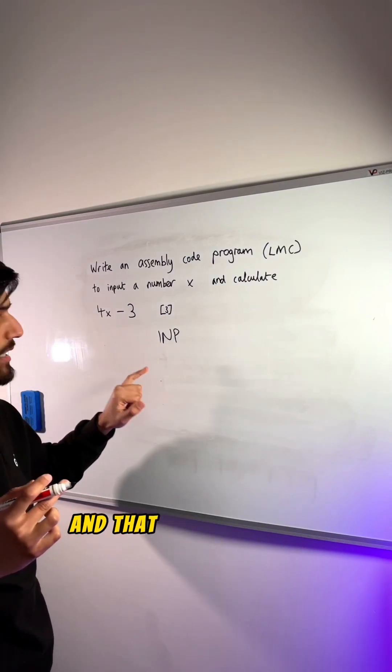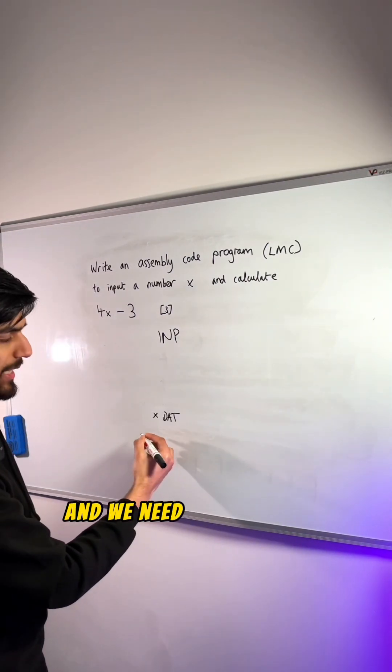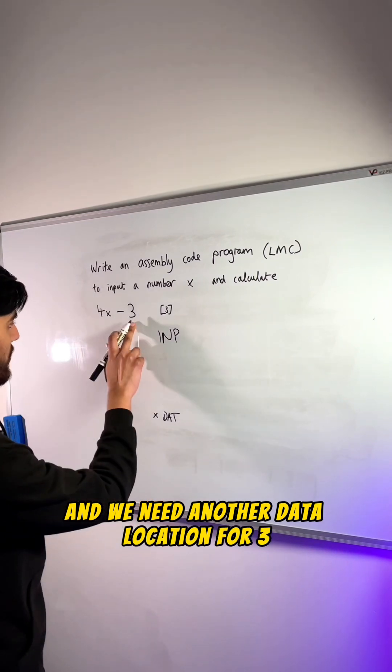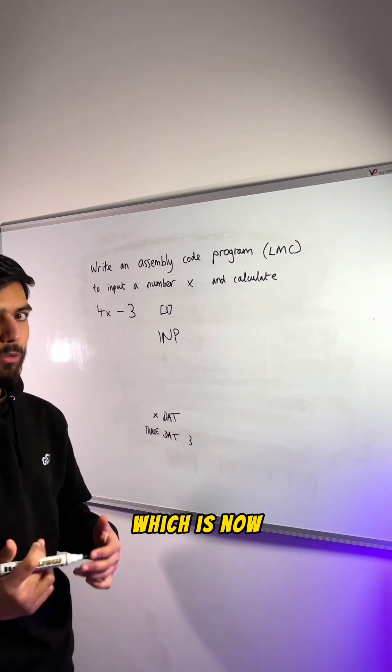Let's call a label x, and we need another data location for 3 which we're going to subtract later, which will actually hold a value, which is 3.